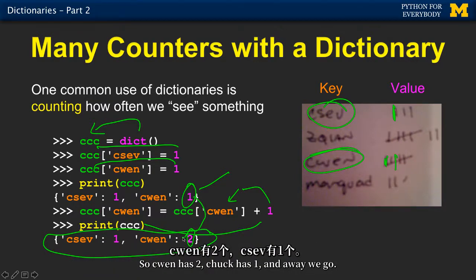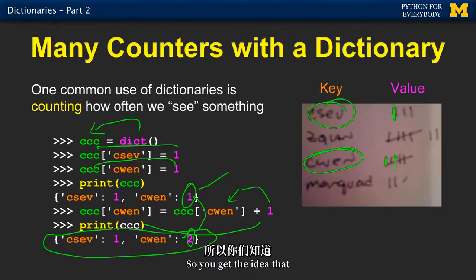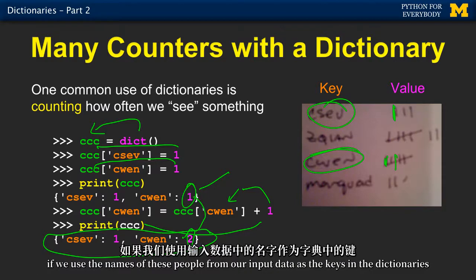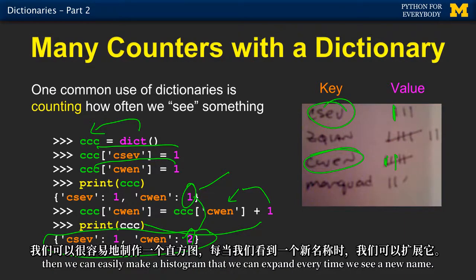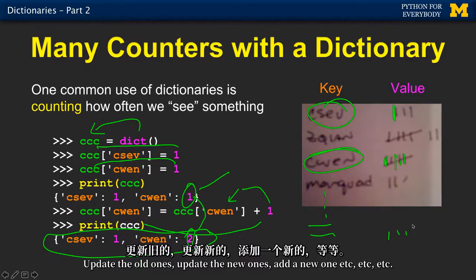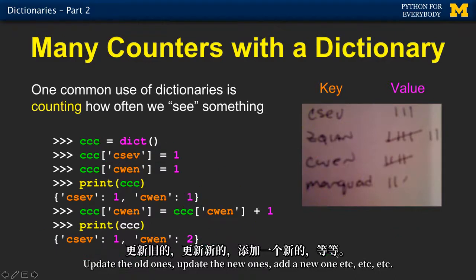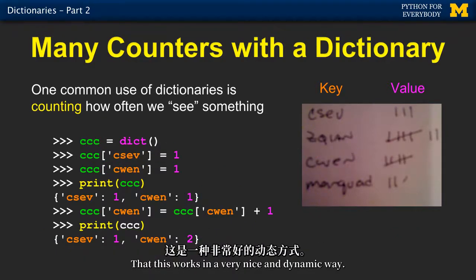So Chen has two, Chuck has one, and away we go. You get the idea: if we use the names from our input data as the keys in the dictionaries and the values are the counts, then we can easily make a histogram that we can expand every time we see a new name, and update the old ones — add a new one, etc. — and this works in a very nice and dynamic way.